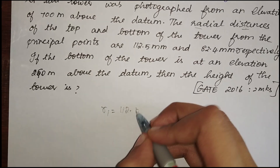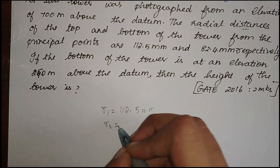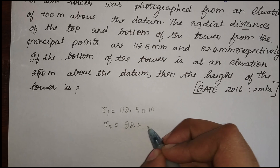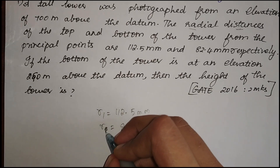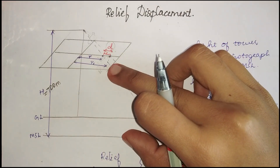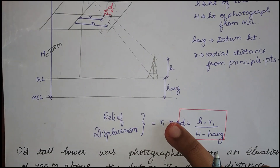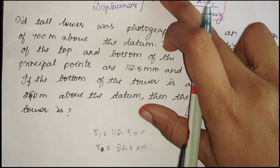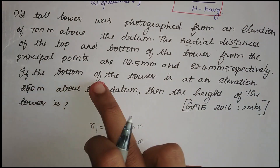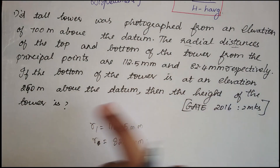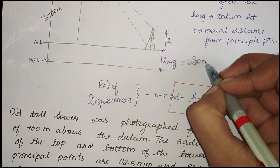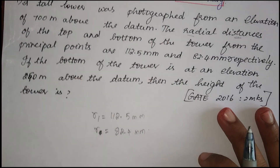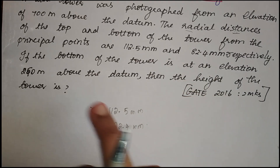The photo was taken 700 meters above the datum, so H is 700 meters. The radial distance from the top, r1, is 112.5 mm and from the bottom, r, is 82.4 mm. The bottom of the tower is at an elevation of 250 meters above the datum, so h_average is 250 meters.